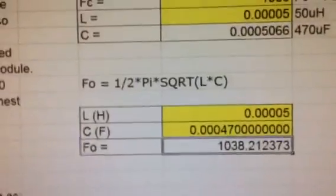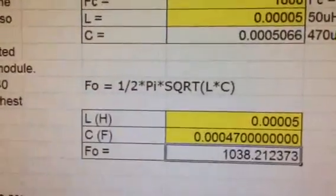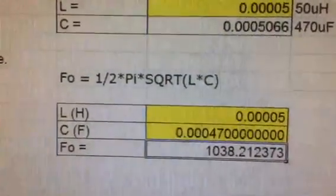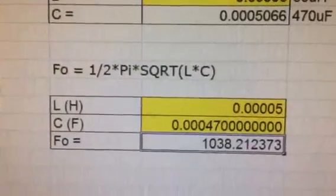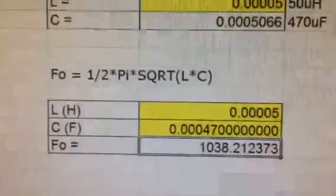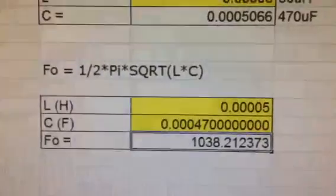All LC circuits have a resonant frequency. You have a series LC circuit and a parallel LC circuit. The difference is a series LC circuit has a low impedance at the resonant frequency, and a parallel LC circuit has a high impedance at the resonant frequency. So what does that mean?